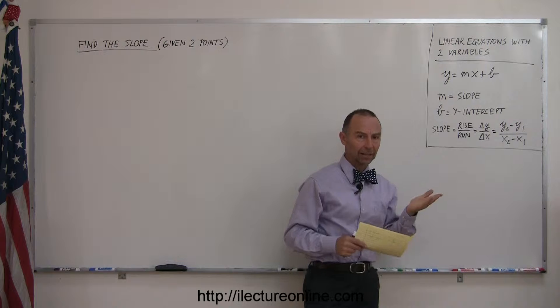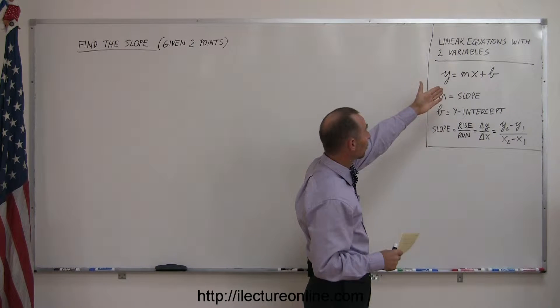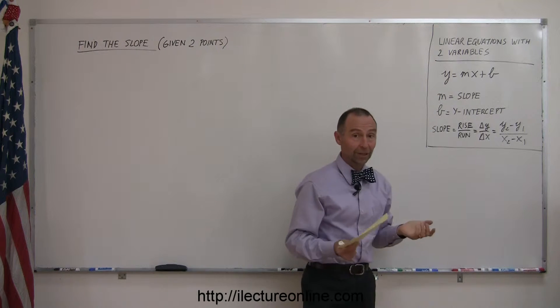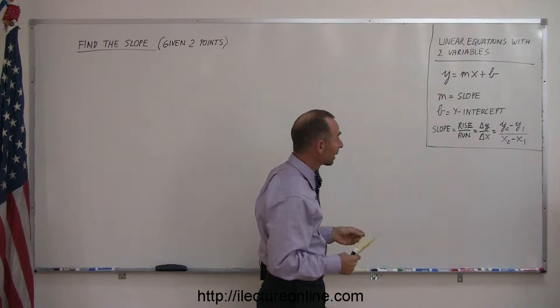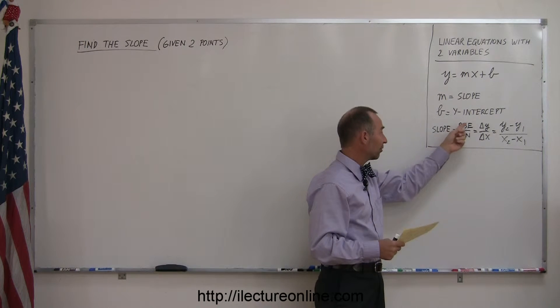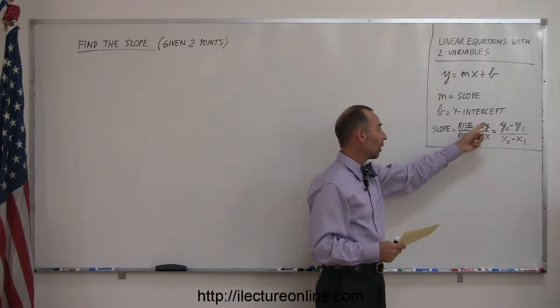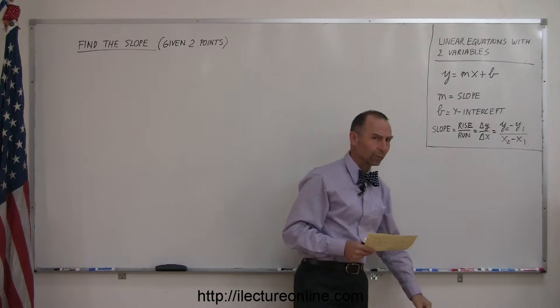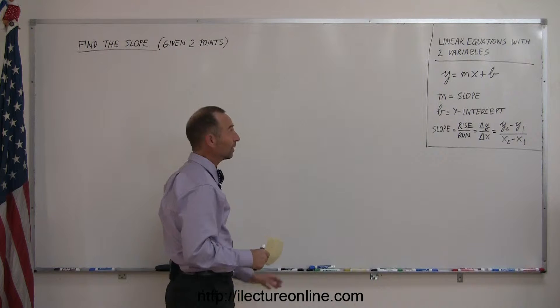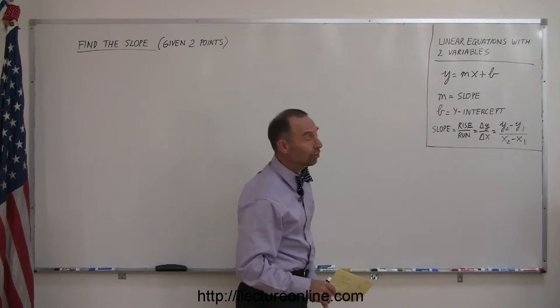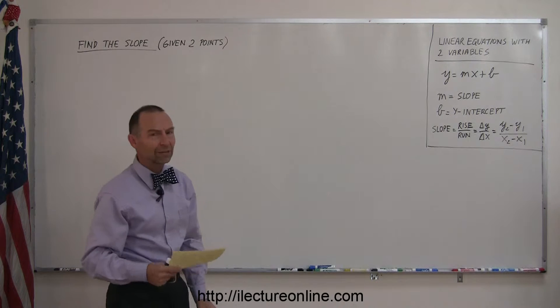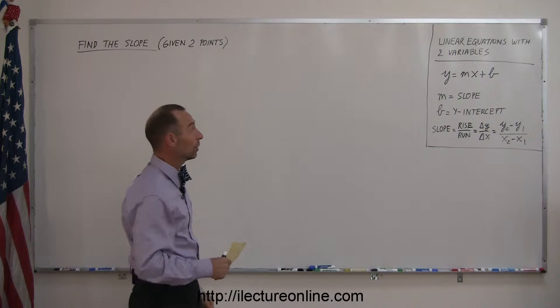And by definition the slope of a line, and by the way a linear equation with two variables will be represented by a straight line on the xy axis. And the slope by definition is the rise over the run, the change in the y over the change in x. And again we'll see in just a moment what all that means. But this is basically the whole thing, all what you need to know in order to solve a whole array of different kinds of problems that you're going to run into in algebra.